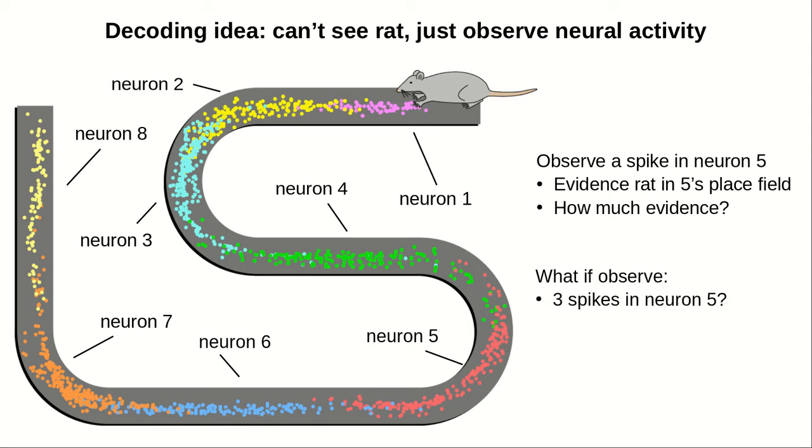What if you observe not just one spike in neuron 5 but three spikes? Does that increase your confidence that the rat is in neuron 5's place field? What if you observe spikes in both neuron 4 and neuron 5? Maybe the rat is over here in the location where the place fields of neurons 4 and 5 overlap. However, what if you observe spikes in both neuron 5 and neuron 8? There doesn't appear to be any overlap in the place fields of neuron 5 and neuron 8. How can we interpret this observation?